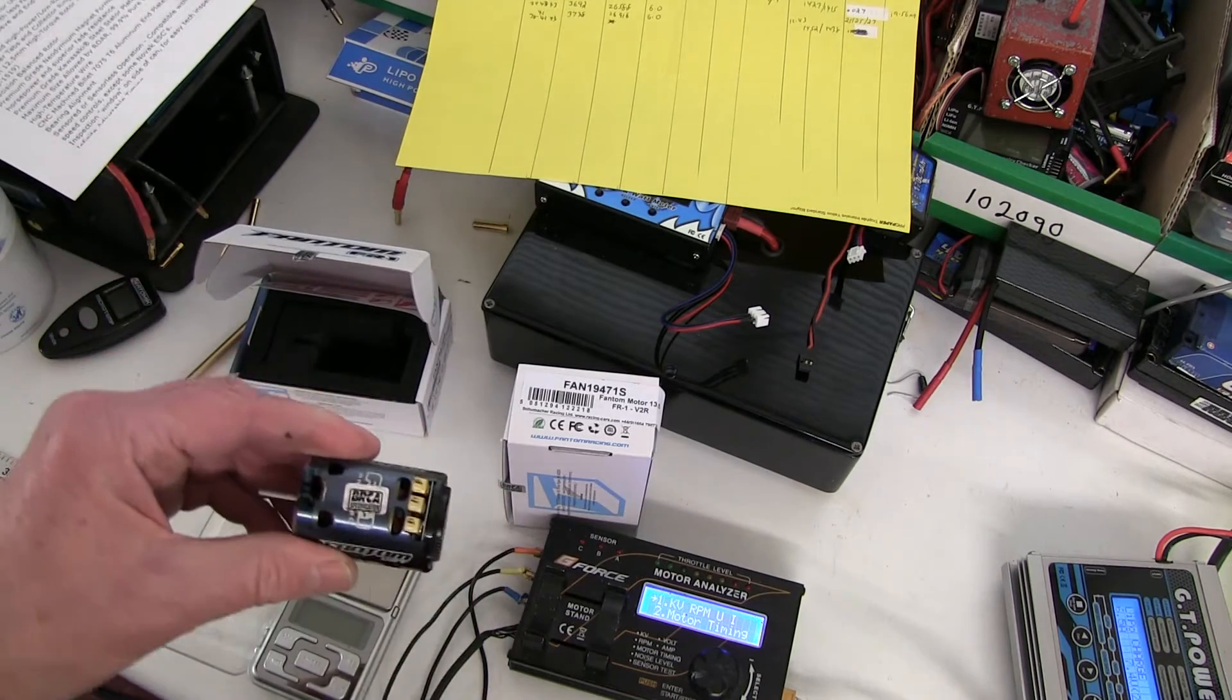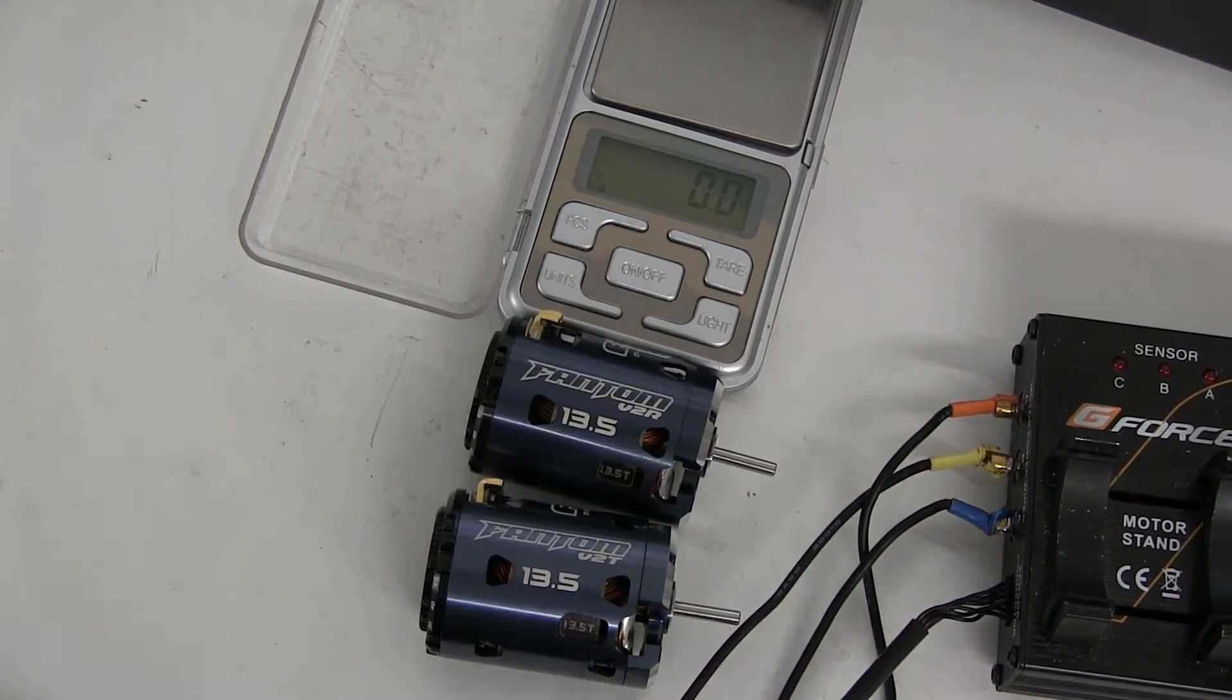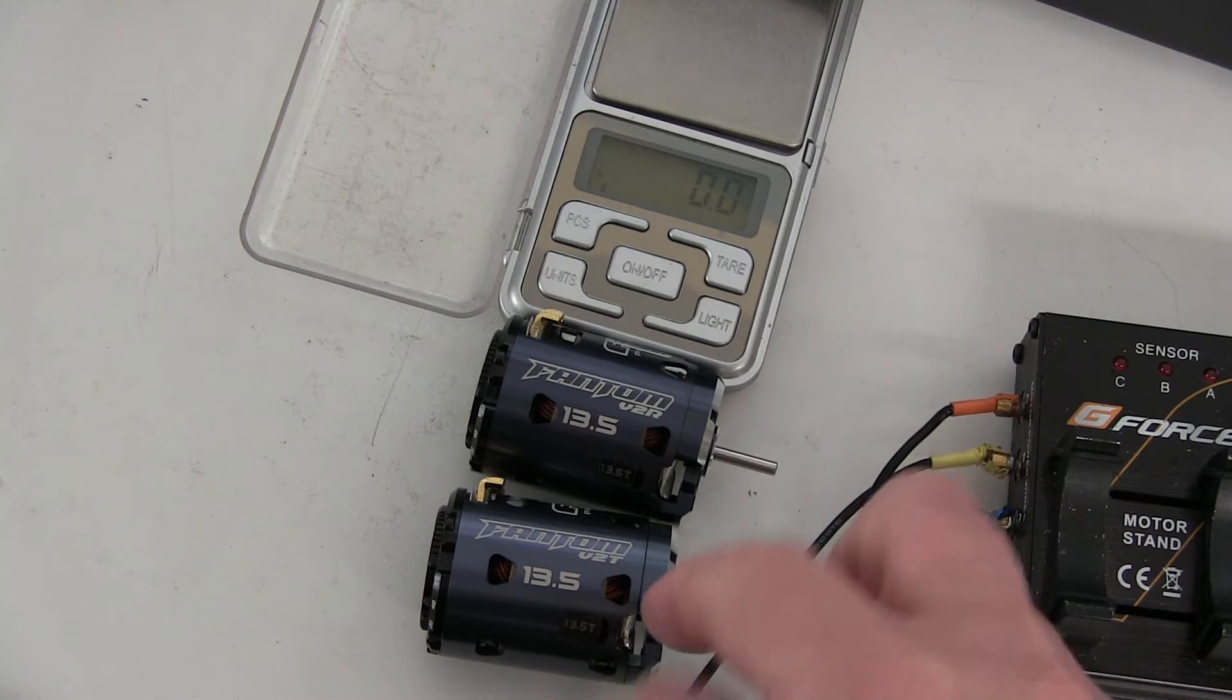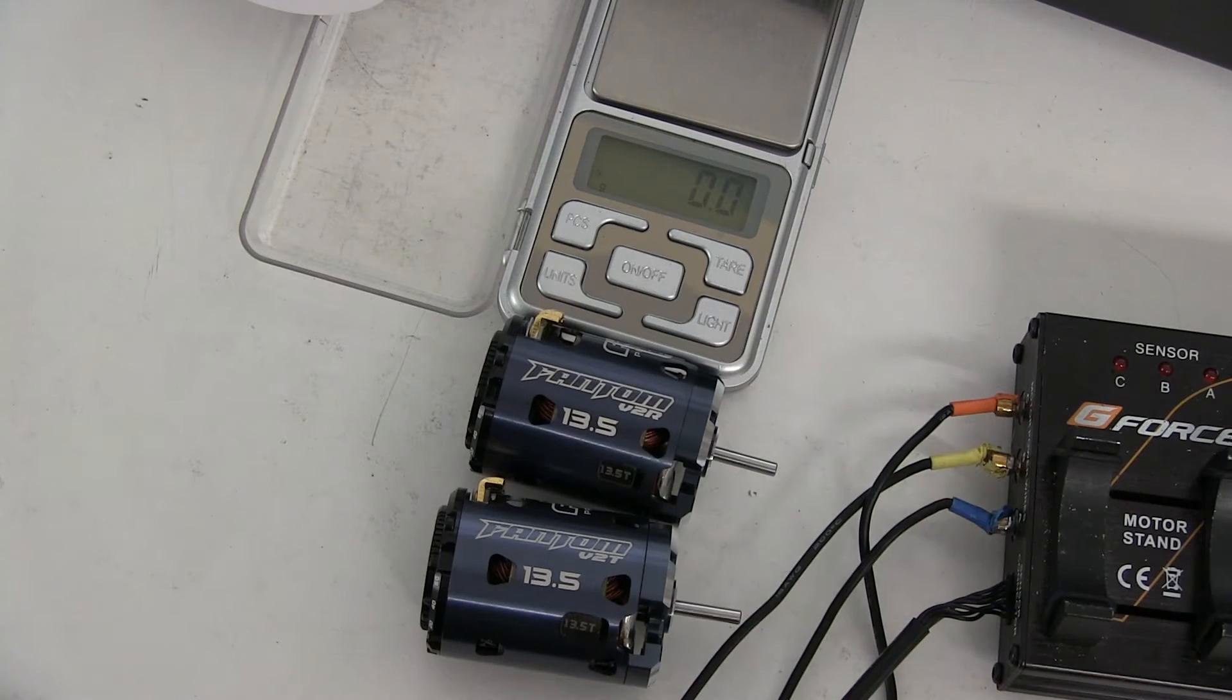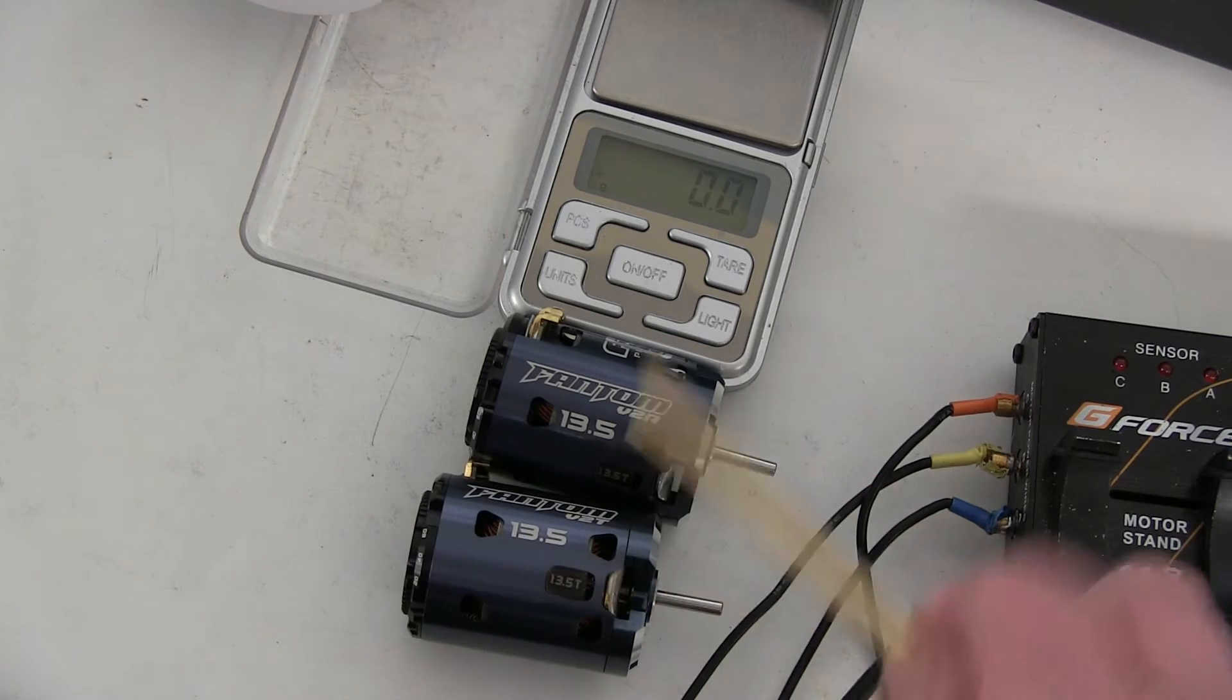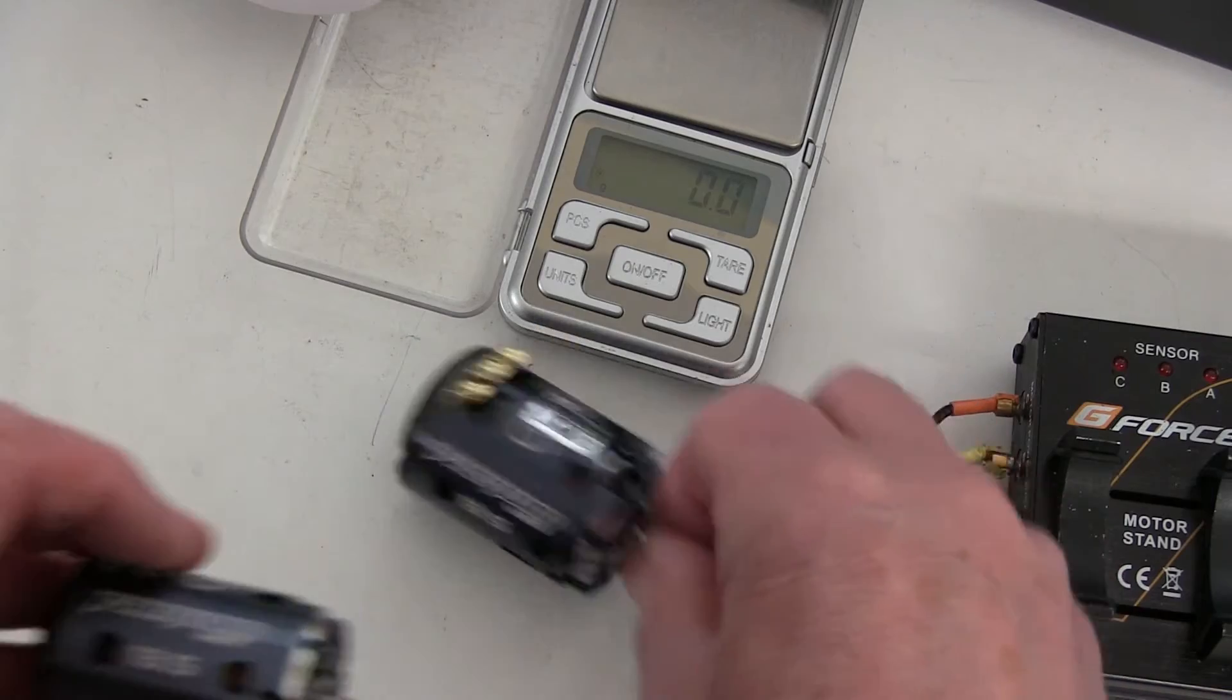In the UK they come with a BRCA approved sticker. Just checking the weight of the two motors. Looking at the motors when they're out of the box, you can see on there it says v2t, that'd be torque, and v2r. Also in the window it just says 13.5t in those two little windows there, but that's the only difference you can see. Let's see what the weight is. We measure the torque one first: 163.8, and the rev one 157.9. So there's quite a difference in weight.